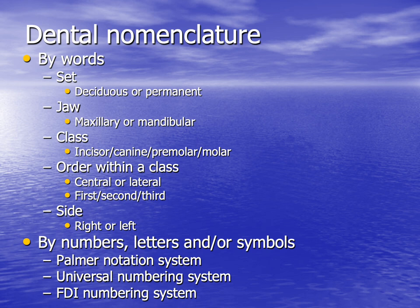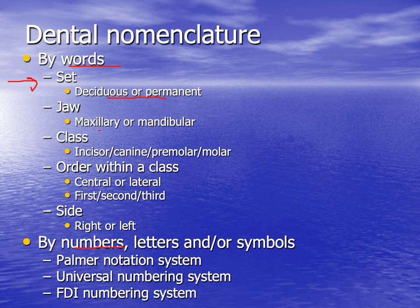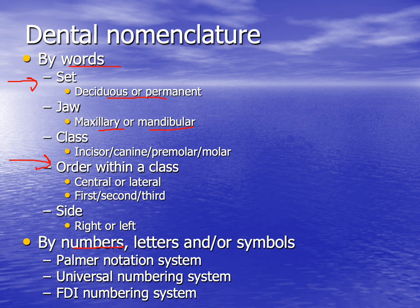Dental nomenclature is the way we name a tooth. We can use either words, or numbers, letters and symbols. When using words to describe a tooth we must specify: which set it belongs to (deciduous or permanent), which jaw it is in (maxillary or mandibular), its class (incisor, canine, premolar or molar), its order within the class (e.g., central or lateral incisor, first or second premolar, first, second or third molar), and the side — right or left.